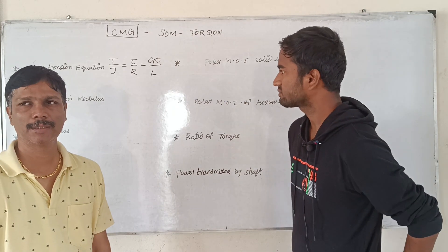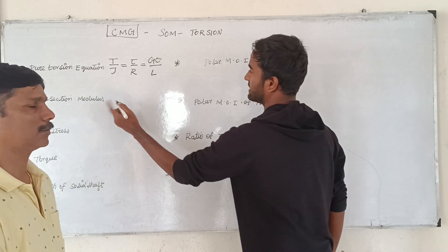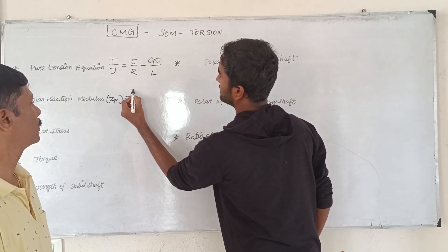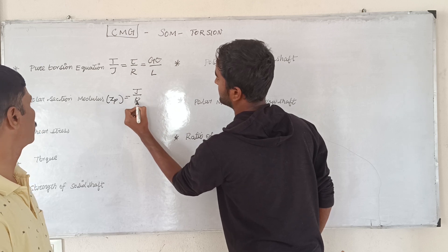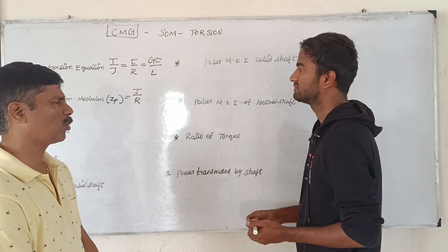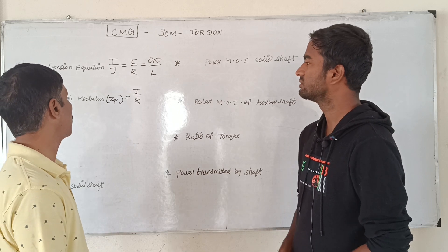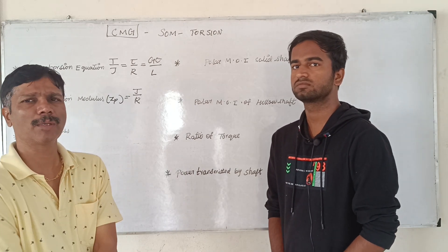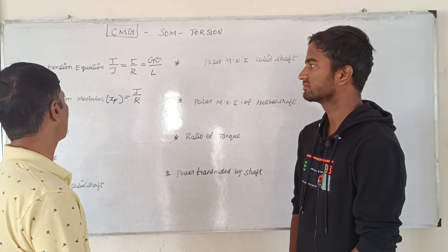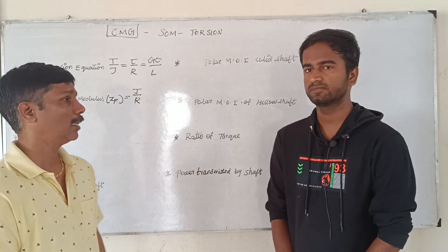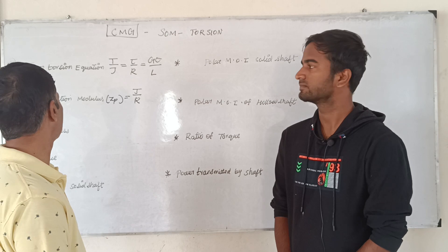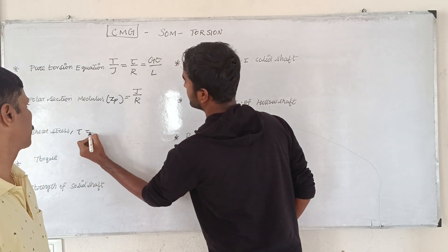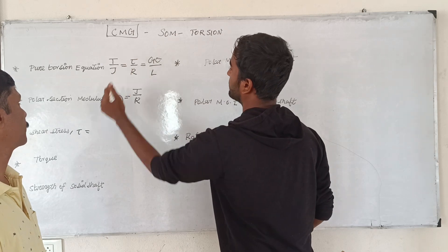Tell us about Polar Section Modulus. Polar Section Modulus is ZP. ZP is J by R. We are referring to J by R. The shear stress Tau — we cannot exceed the Tau here. Even here, it is just T·R by J.